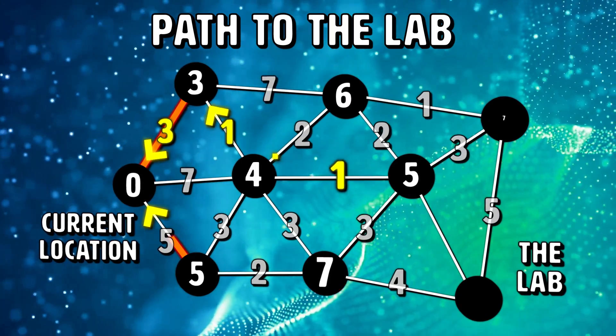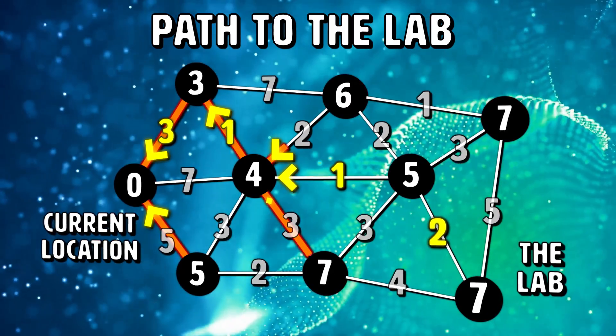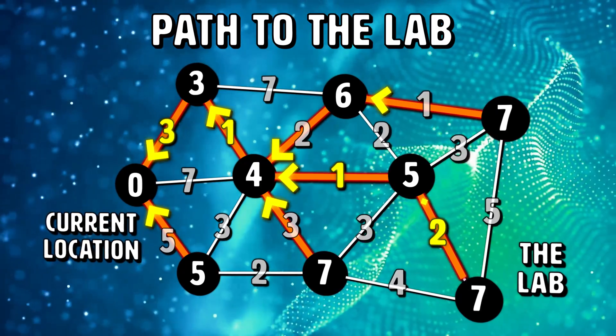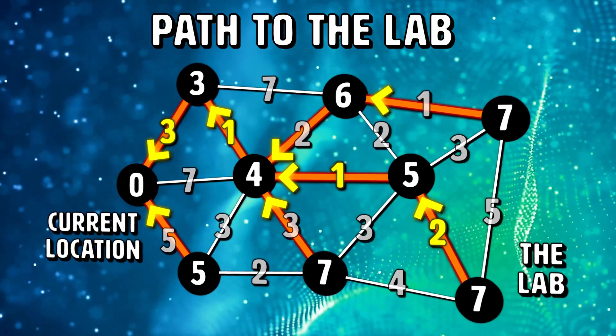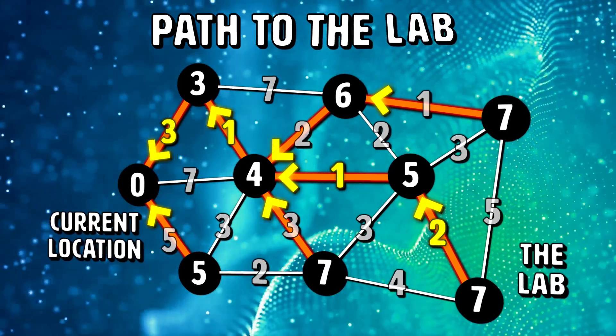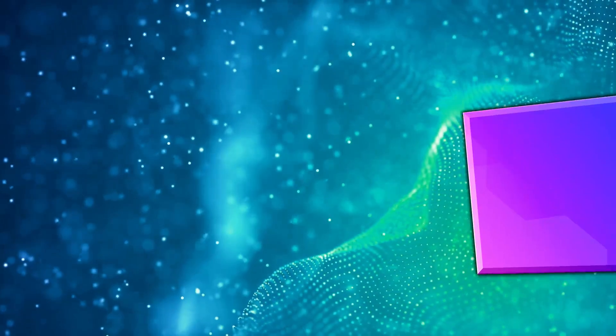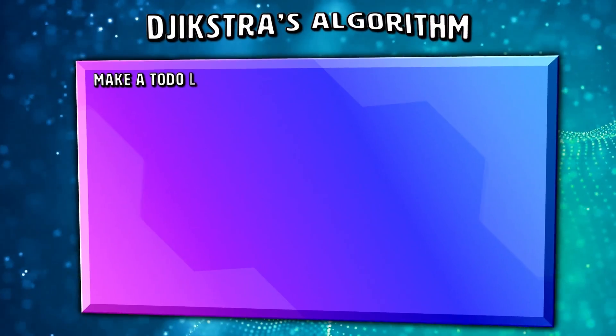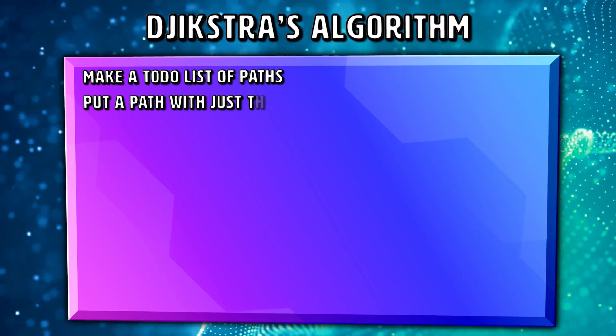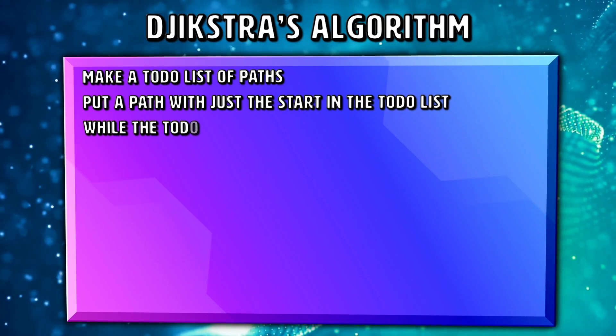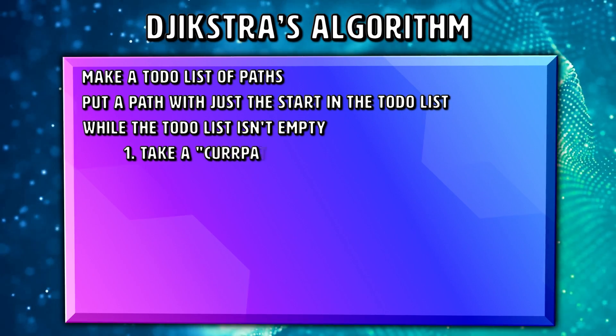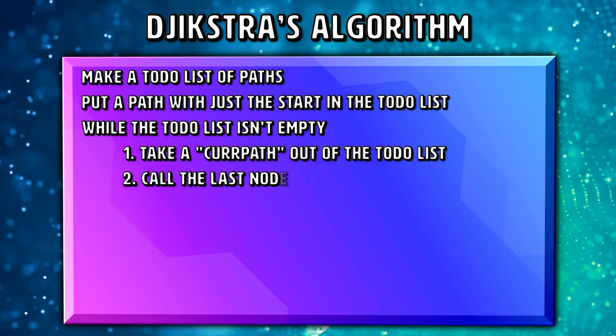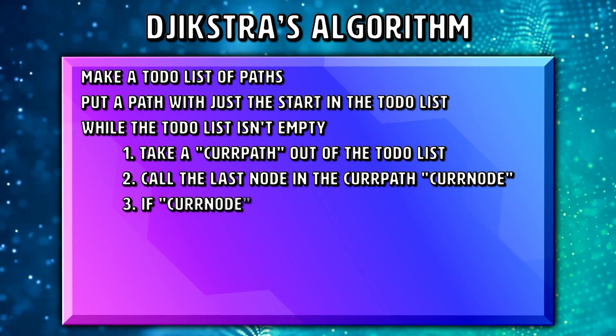This is graph theory, the study of graphs, and an important part of discrete math. Graphs are mathematical structures used to model relations between objects, in our case, intersections. In graph theory, the problem of finding a path between two vertices such that the sum of the weights of its constituent edges is minimized would be ideal. The weights in our case would be the time it takes to drive from one vertex to the other.